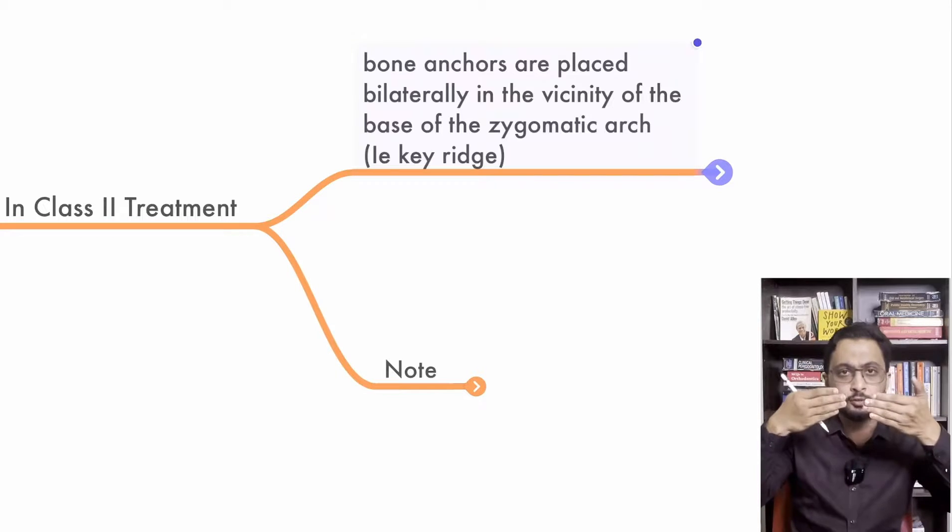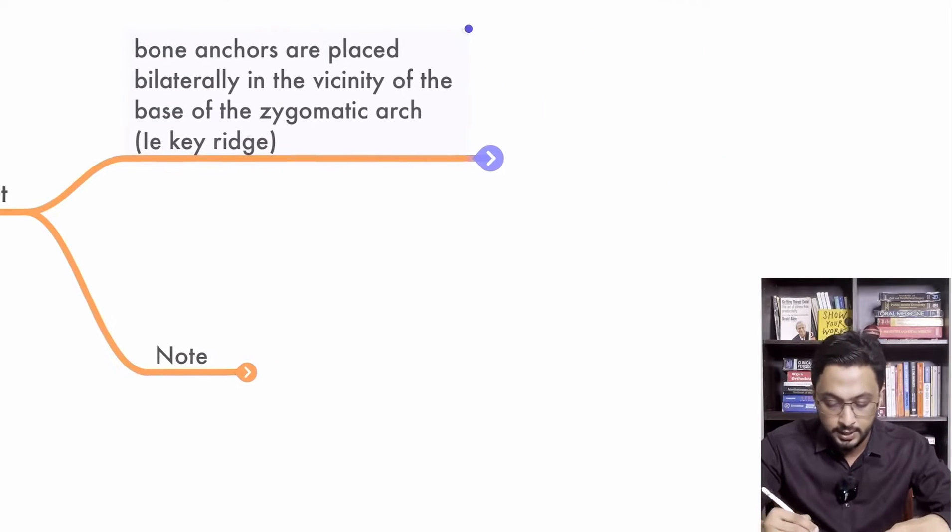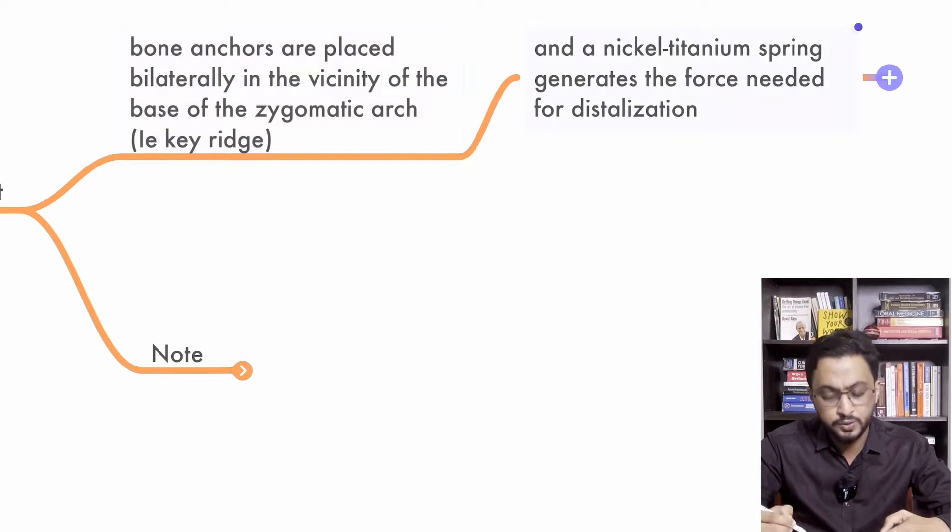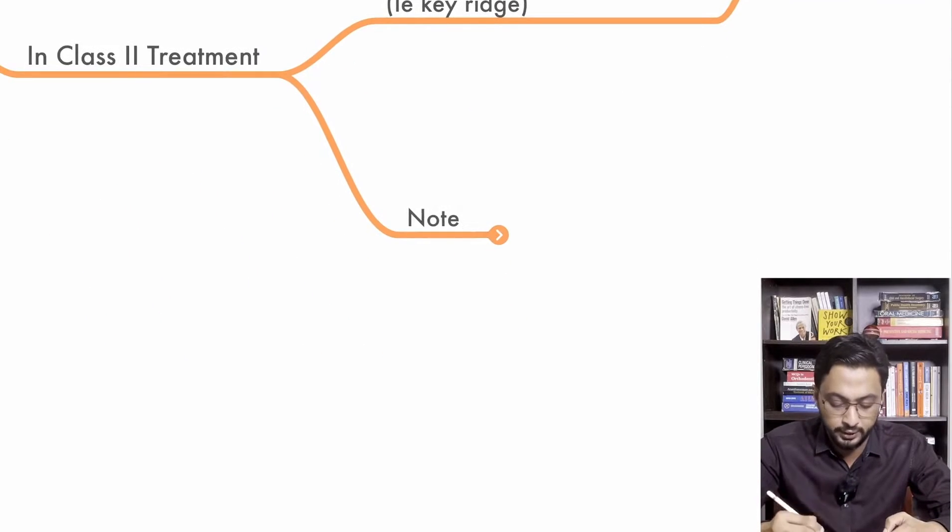The maxilla is forward in class 2, or the maxillary teeth are forward. If you want to push it back, you need an anchor. You place the anchor in this particular zone and use the force backward. Using nickel titanium spring generates force to push it backward. So that is the treatment part of it.